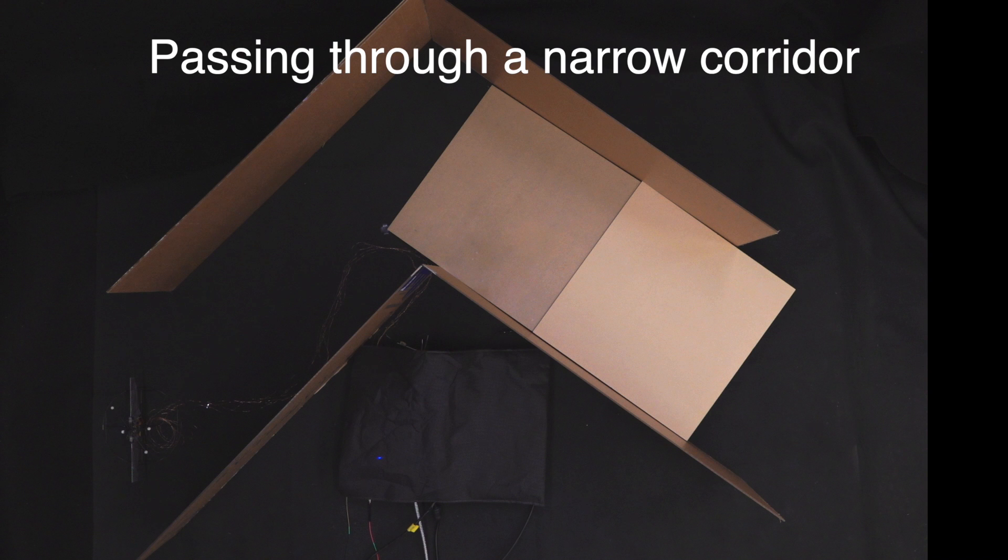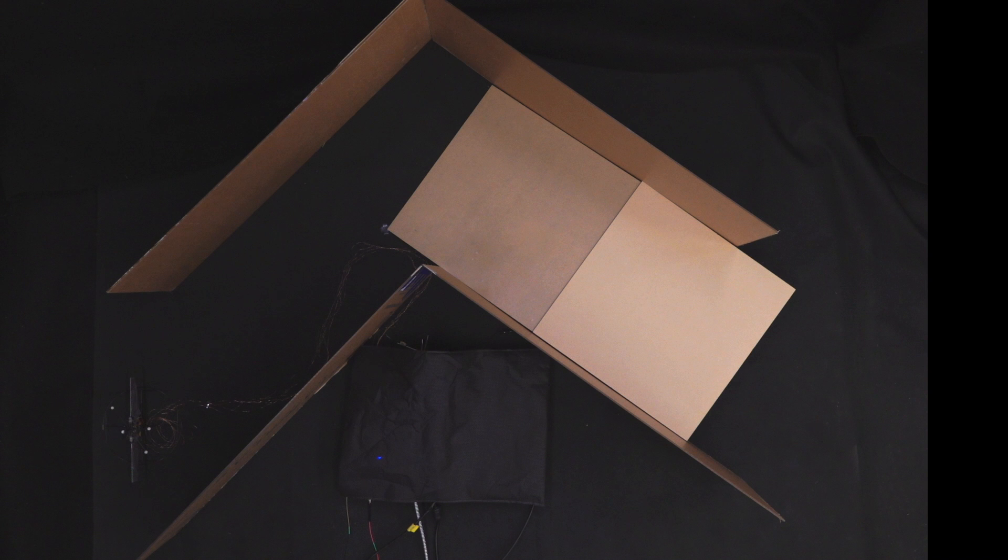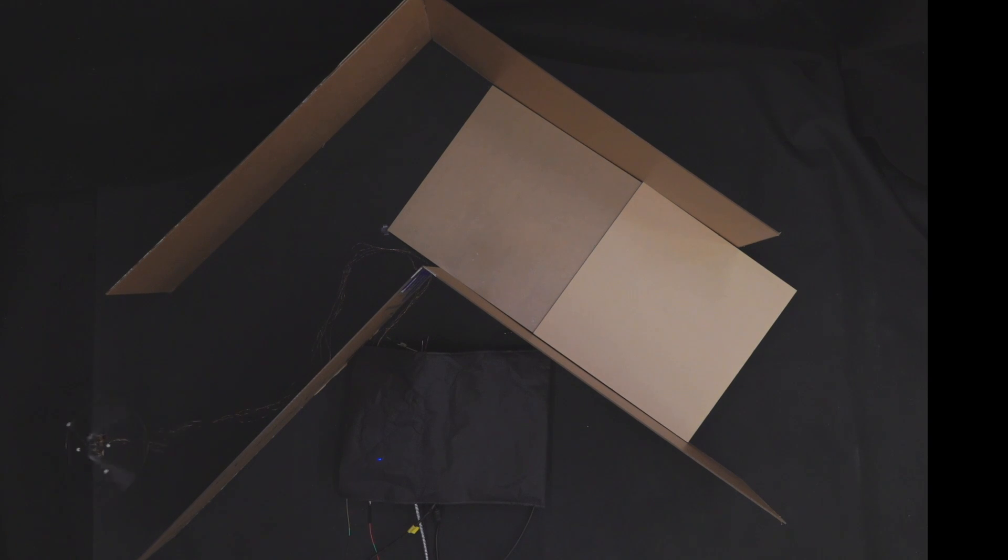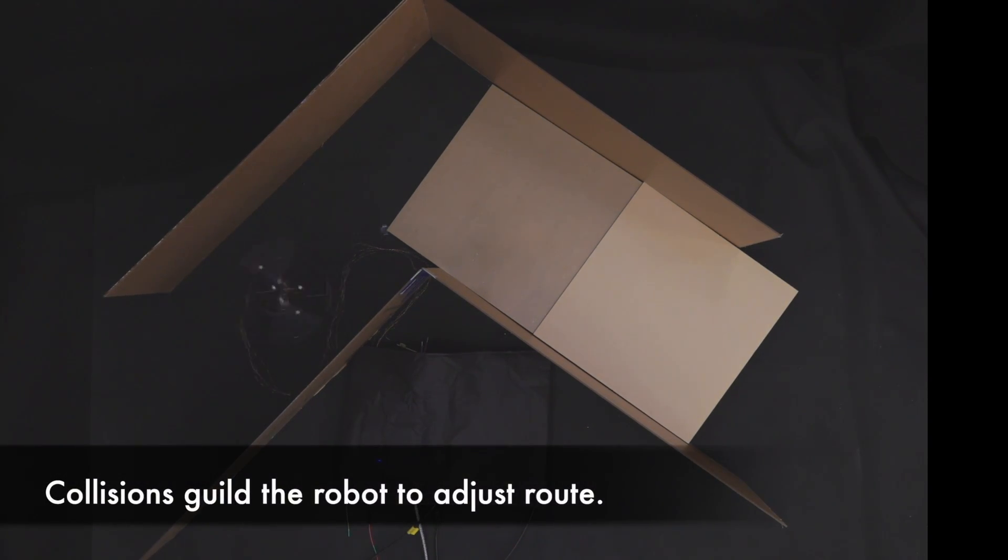To demonstrate the hummingbird robot's ability to navigate in a tight space, the robot is asked to fly through a narrow corridor. The width of this corridor is one foot, less than two wingspans.